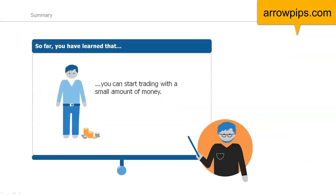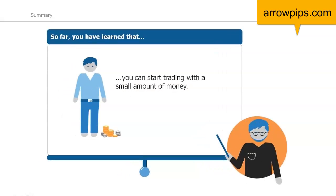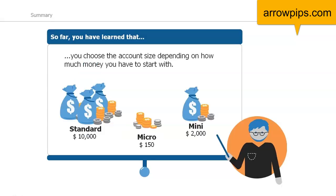So far, you have learned that you can start trading with a small amount of money. There are different types of lot sizes that you can trade, and you choose the lot size depending on how much money you have to start with. To trade with standard lots, you ideally need $10,000. To trade with mini lots, you ideally need $2,000. And to trade with micro lots, you ideally need $150.